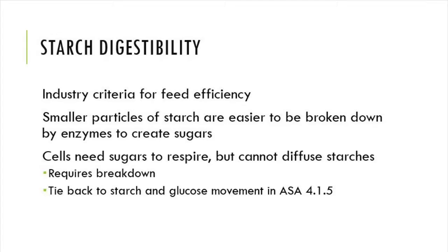Starch digestibility is a large criteria set forth by livestock nutritionists. One of the ways that you can monitor this is through studies of how an animal is able to use the starches and how long it takes to digest them. One influence behind this is smaller particle sizes as mentioned earlier through micron size. Corn with a smaller micron size has a higher surface area and therefore is more digestible. It would be a neat extension activity for kids to compare results of the same feedstuff at different micron sizes.